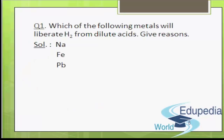Sodium, iron, and lead occur above hydrogen in the activity series, so they will liberate hydrogen from dilute acids. Copper and mercury occur below hydrogen in the activity series, so they will not liberate hydrogen from dilute acids. Therefore, the answer is sodium, iron, and lead.